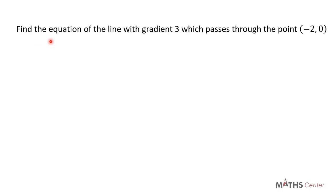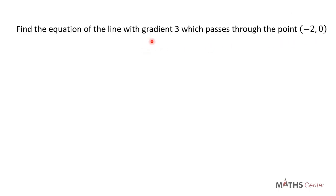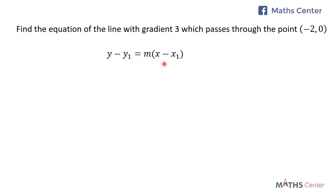Find the equation of the line with gradient 3 which passes through the point (−2, 0). We have been given the gradient of the line and a point that falls on the line. When you have the gradient and a point on the line, you can use the formula y minus y1 equals m times (x minus x1) to find the equation of the line.